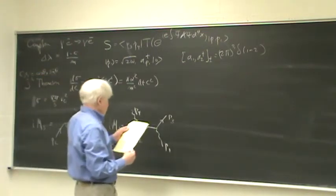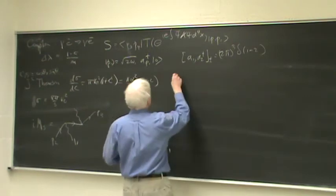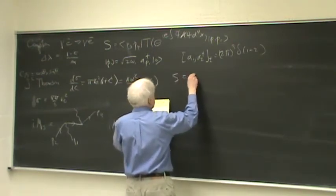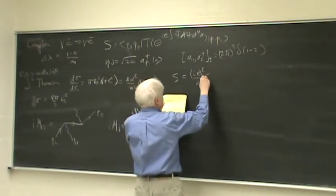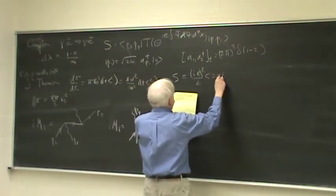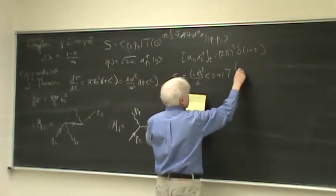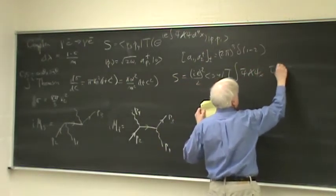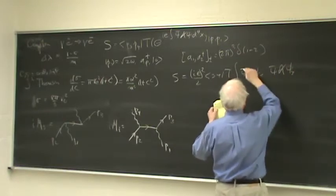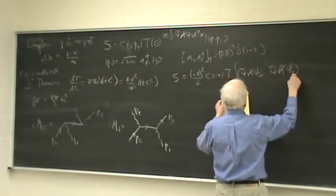Now, if we expand this, we see that S is going to be i e squared over 2. Oh, let me just write 3, 4, T integral, psi bar, a slash psi at x, psi bar, a slash psi at y. This is the time-ordered product. And then we have 1, 2 here.